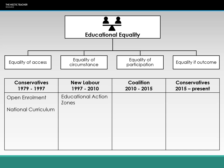Education action zones also related to equality of participation, because they provided opportunities for students who perhaps couldn't afford certain things, or for schools that couldn't get the resources they needed. In that way, all students regardless of which school they attended were receiving the same educational opportunities.